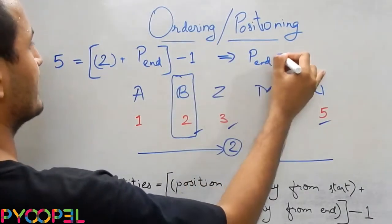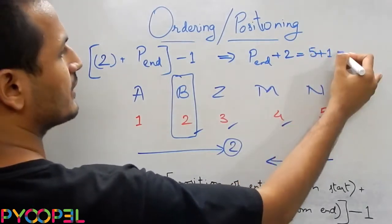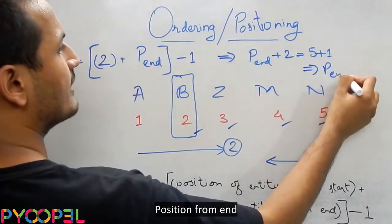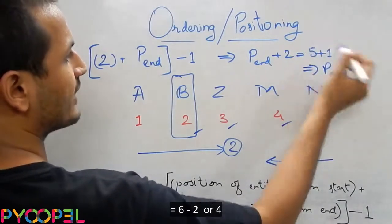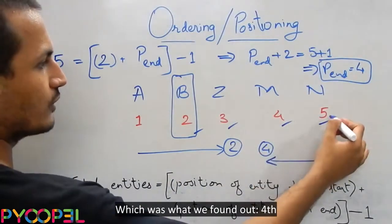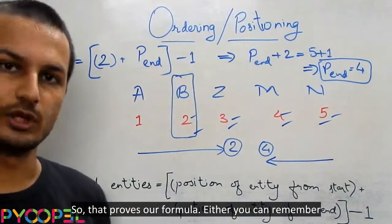Position from end plus two is equal to five plus one, which says again position from end is equal to six minus two or four, which was what we found out. One, two, three, four. So that proves our formula.